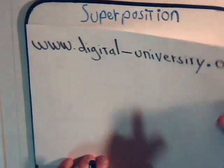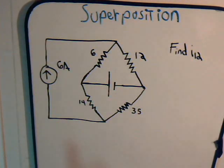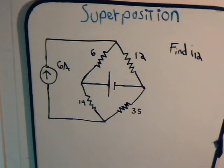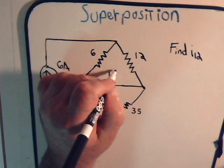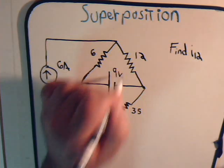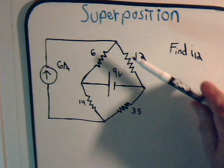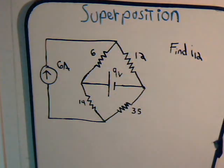Here what we want to do is examine this circuit, where we have four resistors in a bridge type network, and we have a voltage source of 9 volts, and here we have a current source of 6 amps, and we want to determine what is the amount of current that goes through the 12 ohm resistor.